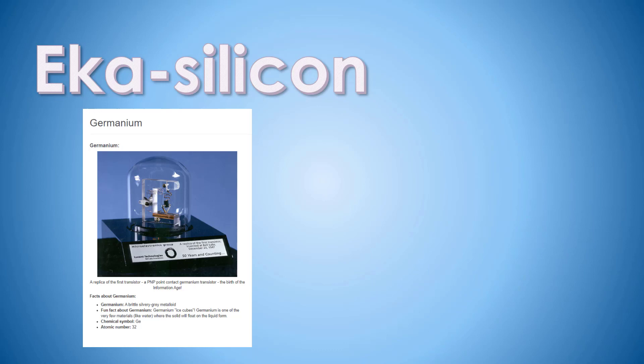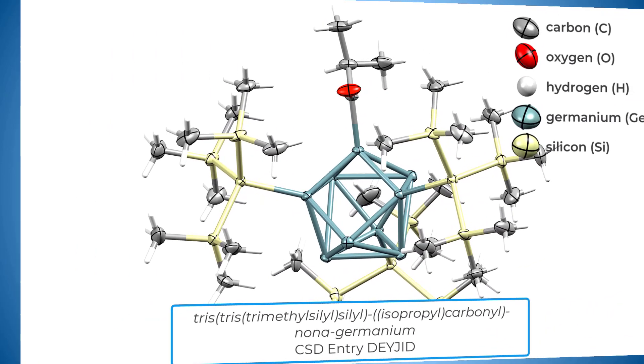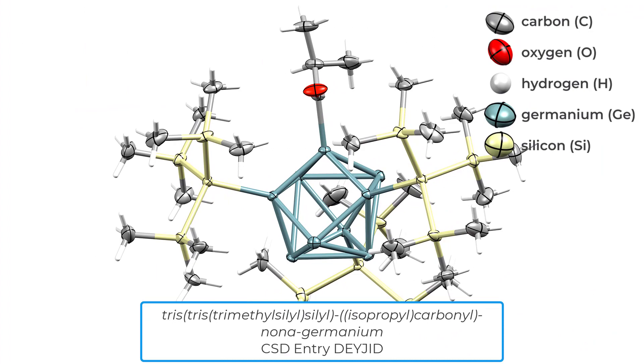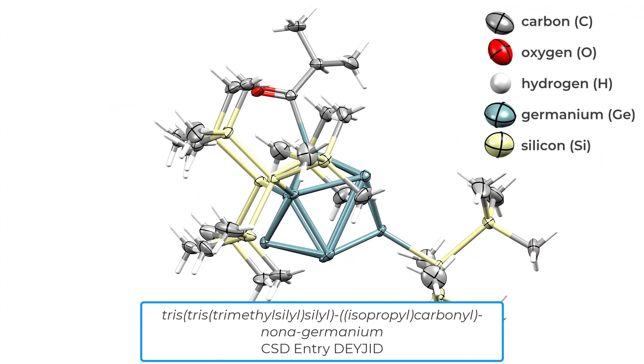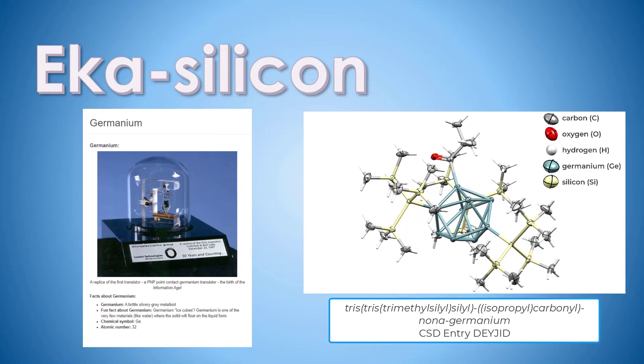Another future application for germanium is likely to be nanotechnology as it can be contained within silicon clusters which are then placed in position and the germanium freed.